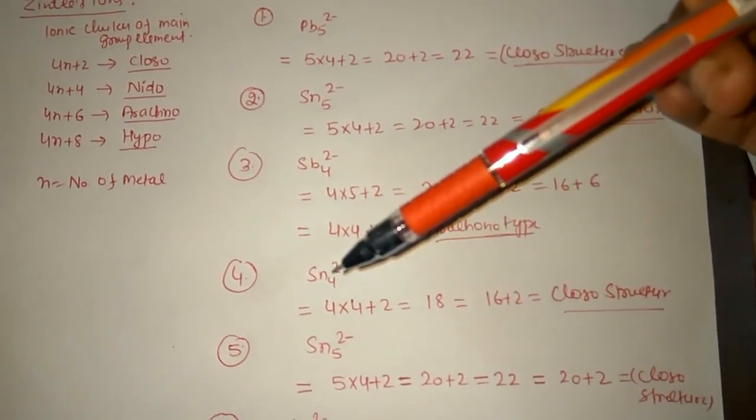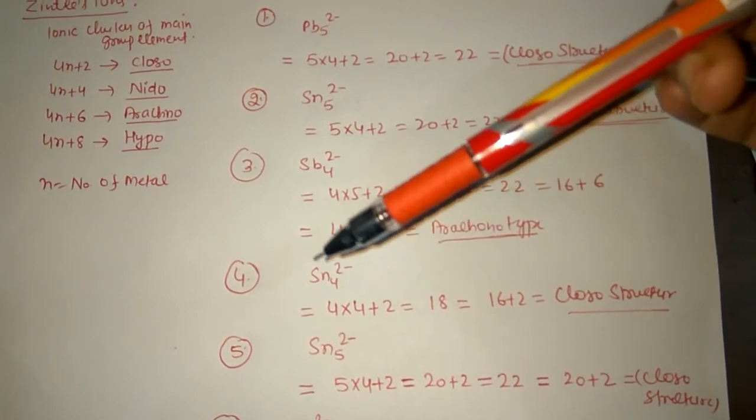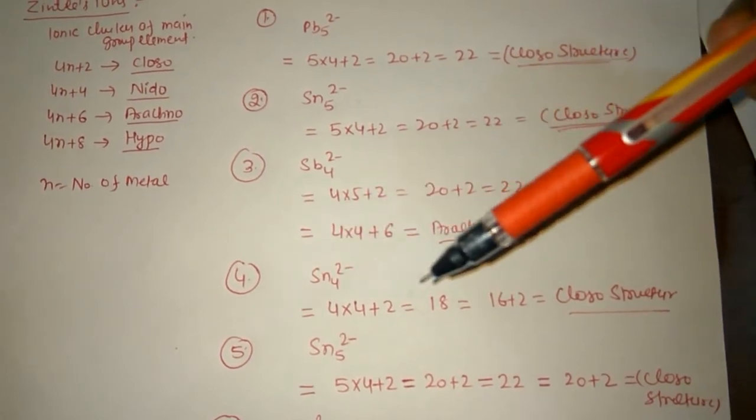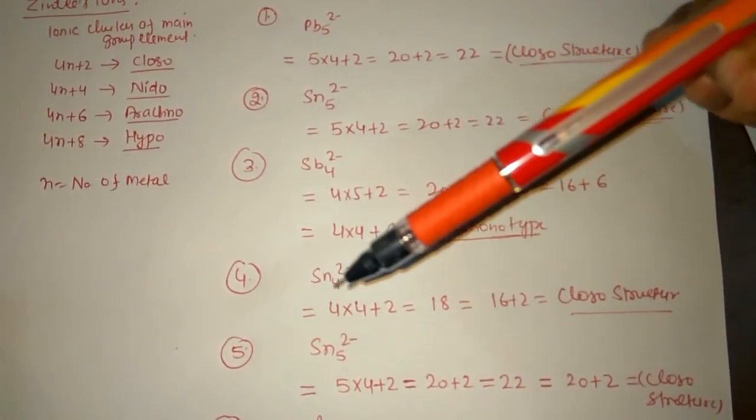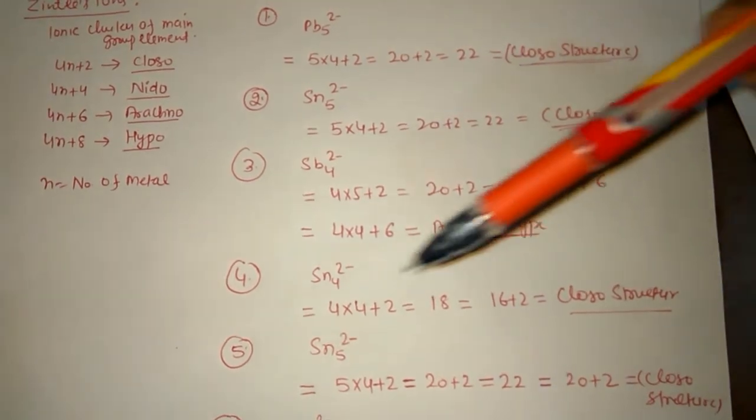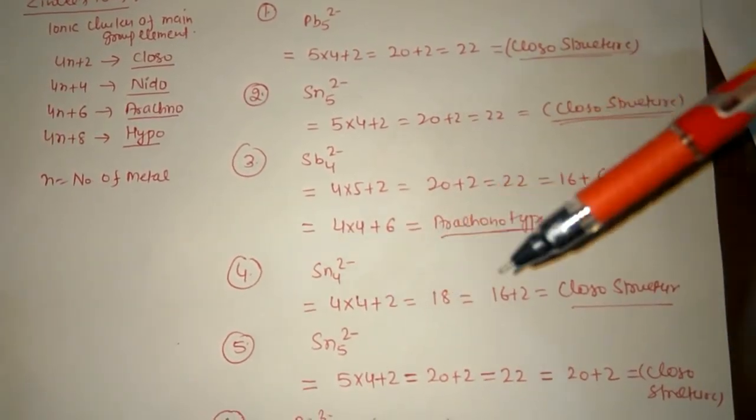Now again, Sn4^2-: that is 4×4 (4 electrons contributed by tin) +2, which equals 18. We have to write 4n plus something: it is 4×4=16+2, so again it is clozo structure.